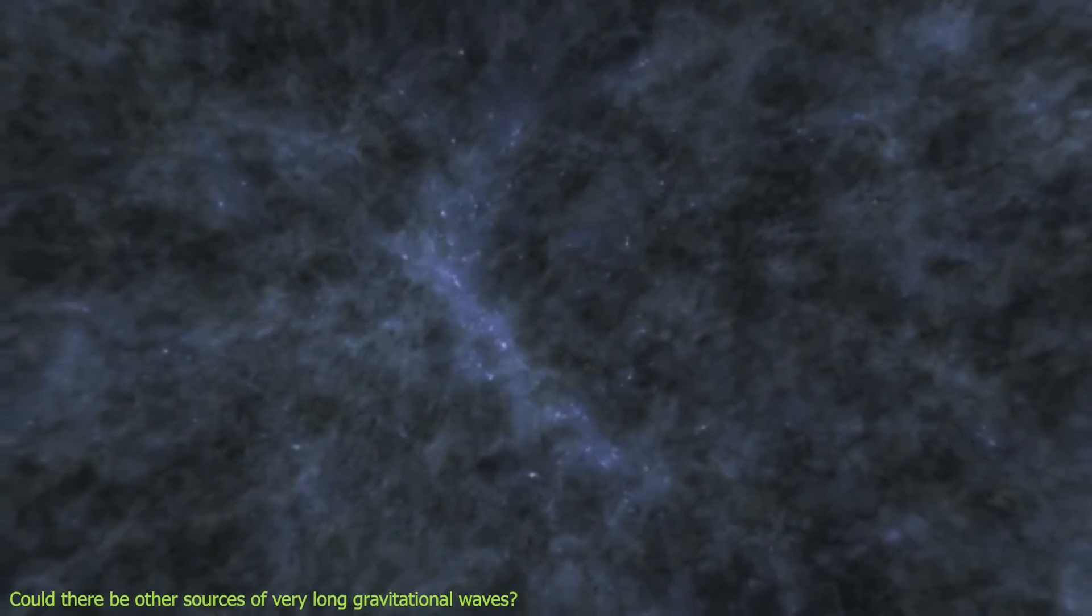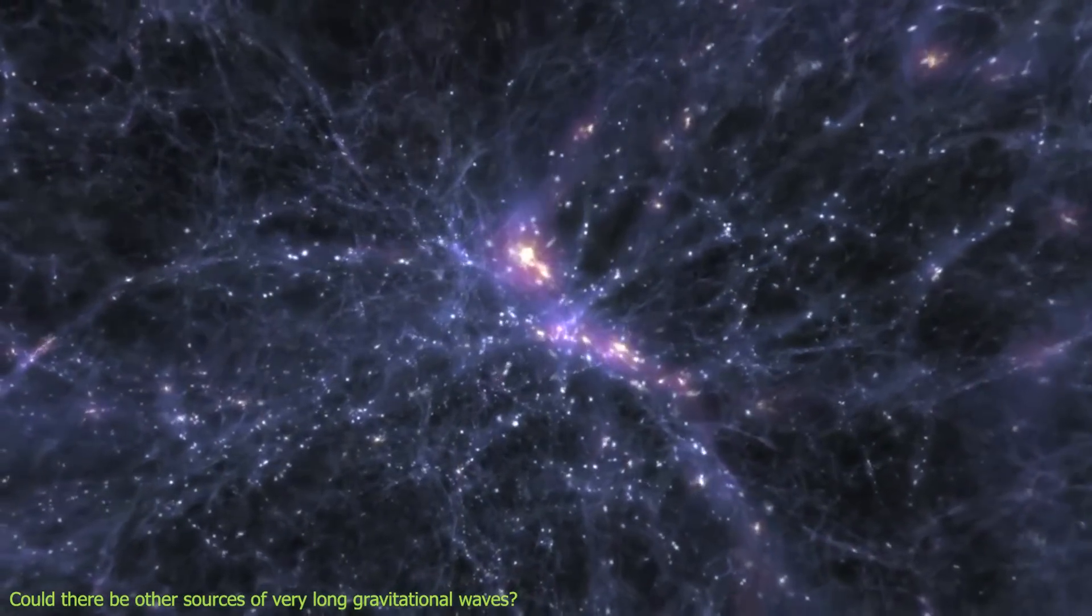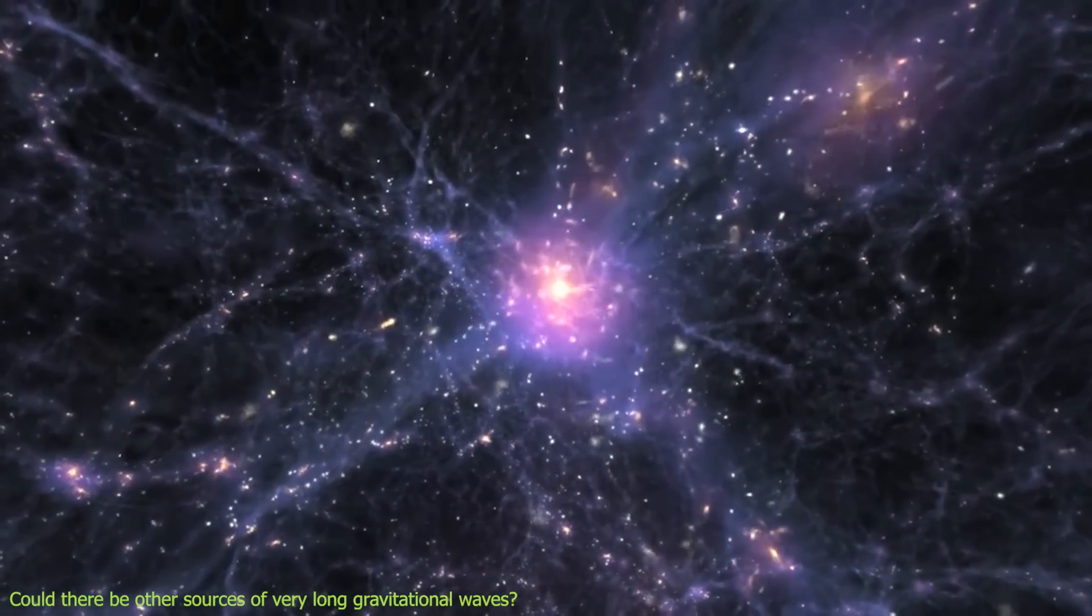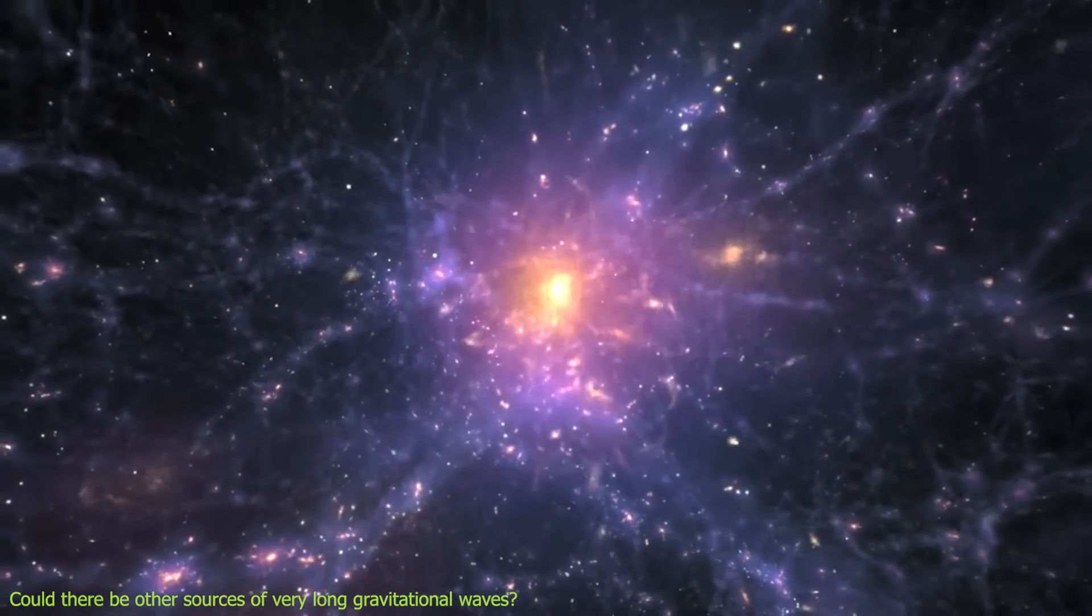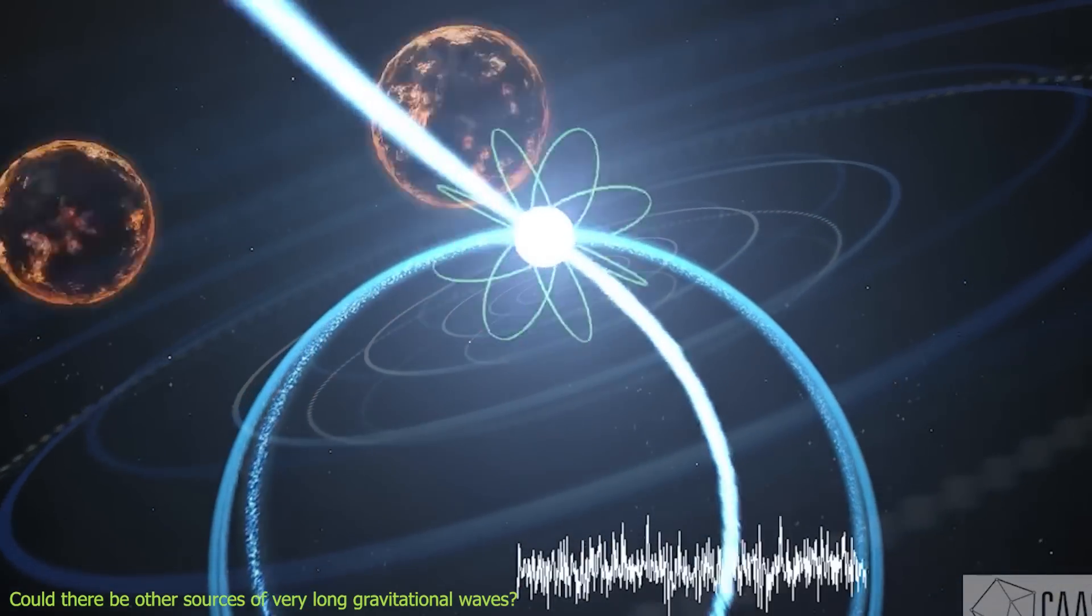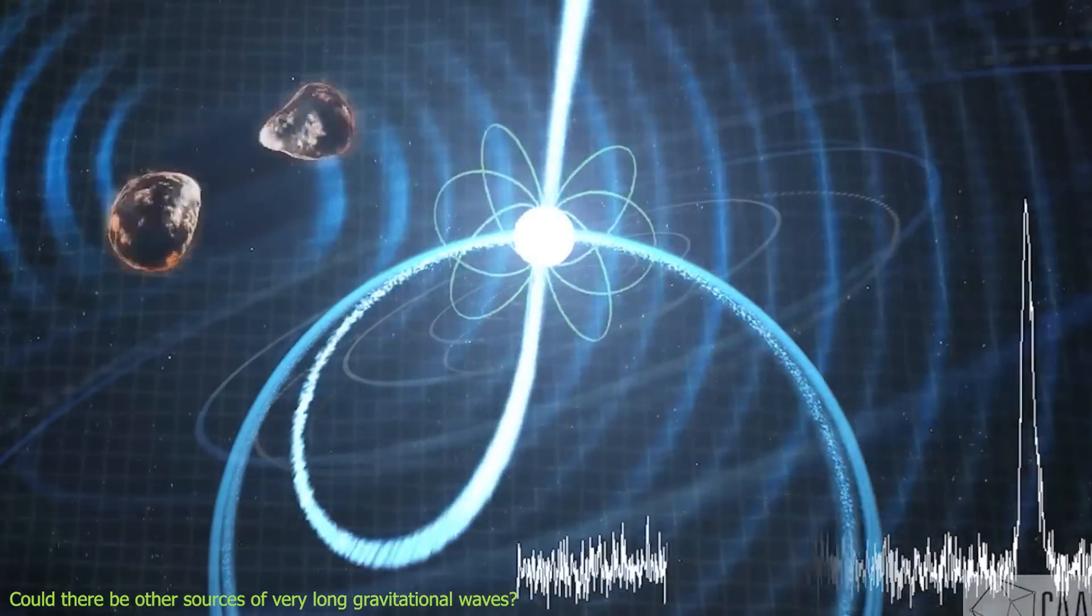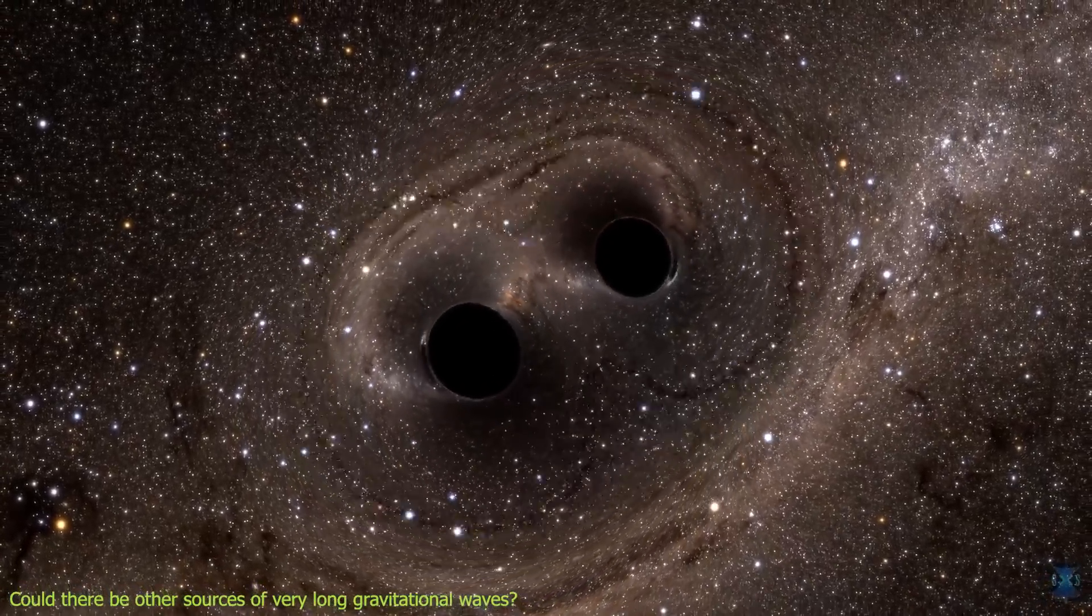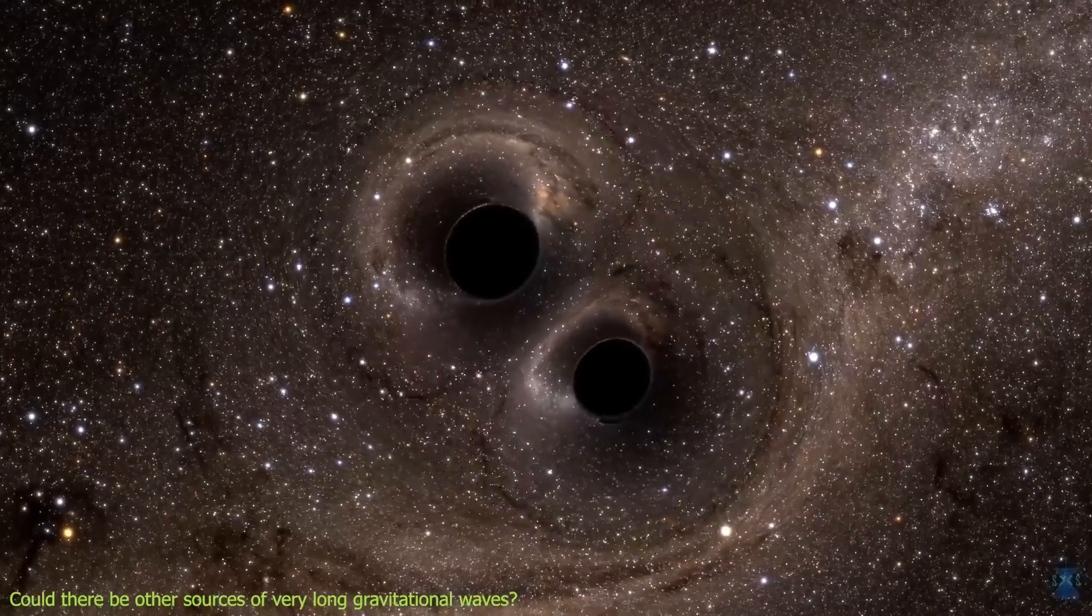Inflationary fluctuations are quantum fluctuations that were stretched to cosmic scales by a period of exponential expansion in the early universe. They seeded the formation of structures such as galaxies and clusters, but they also generated gravitational waves with a broad spectrum of frequencies. However, these waves are expected to be much weaker than those from binary black holes at the frequencies that PTAs are sensitive to. Therefore, binary black holes remain the most plausible and compelling explanation for the stochastic background seen by PTAs.